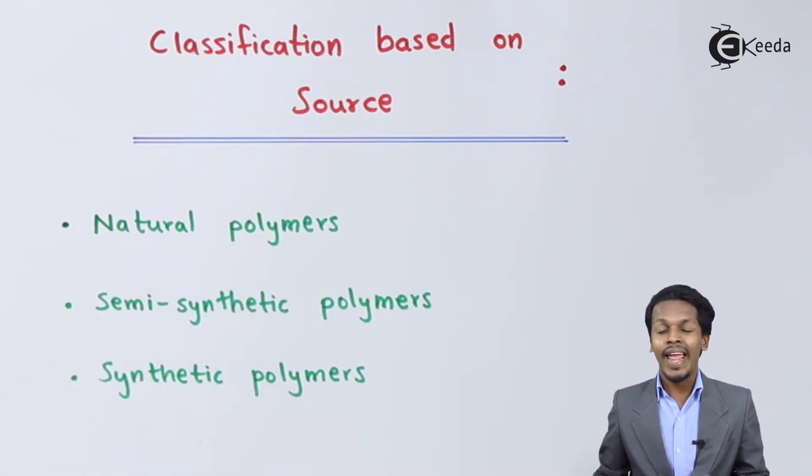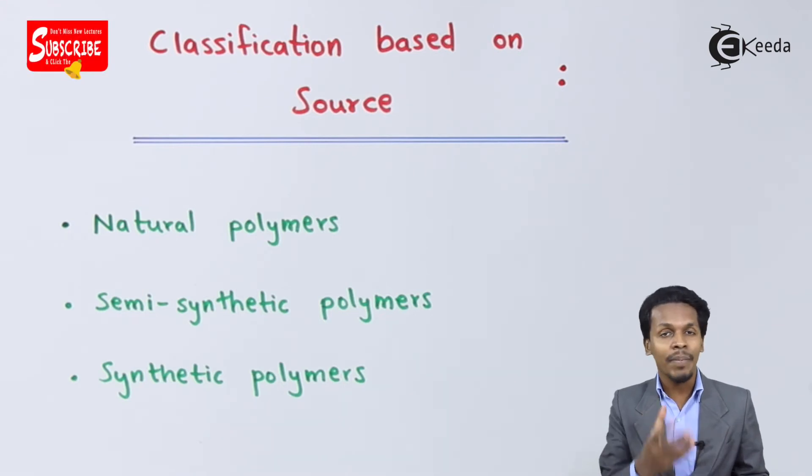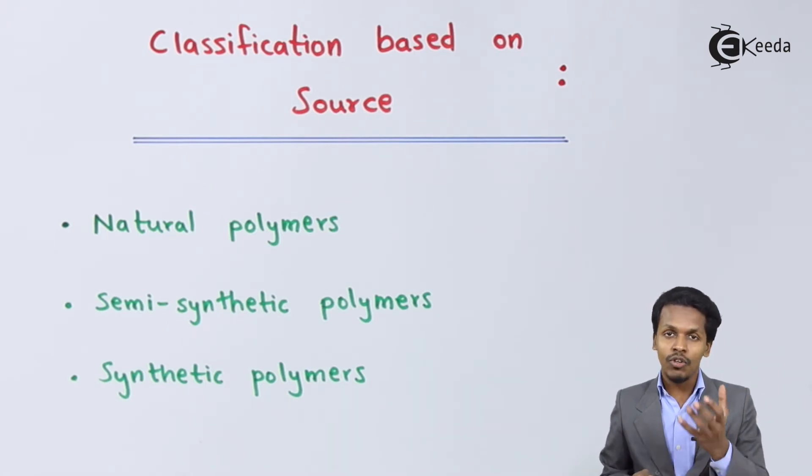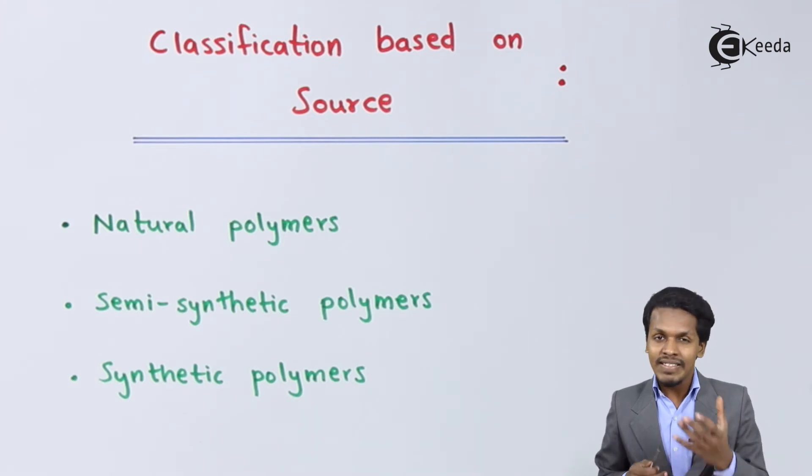Those polymers which are obtained from nature are known as natural polymers. For example, cotton and wood - they are polymers that we can obtain from nature. Other compounds like cotton and silk are all polymers that are occurring in nature itself.